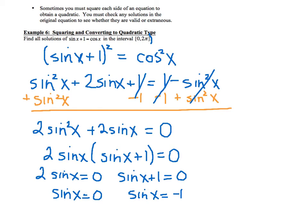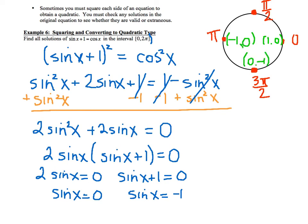So in our circle, we have 3 places where your sine of x is 0 or your sine of x is negative 1. So if we look at our circle, we have these 4 points around our circle: the ordered pairs (1, 0), negative (1, 0), (0, negative 1), and (0, 1).